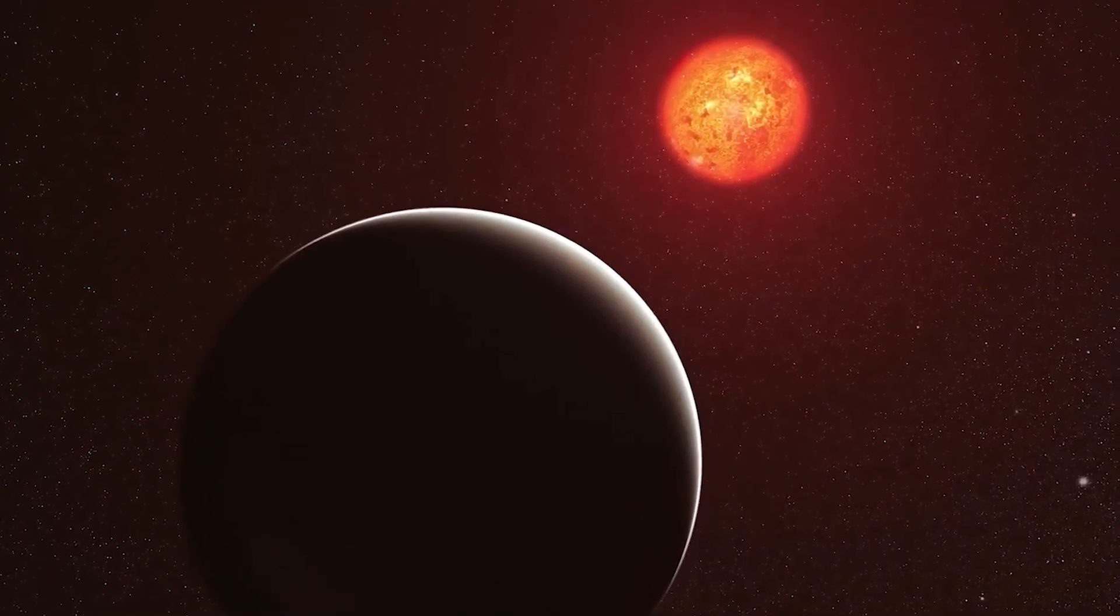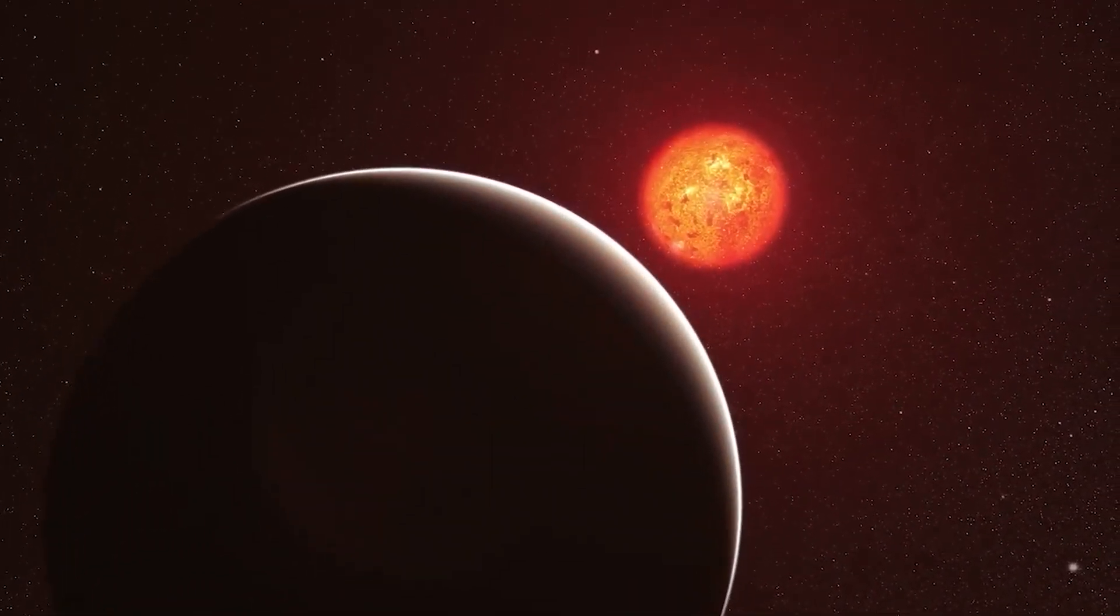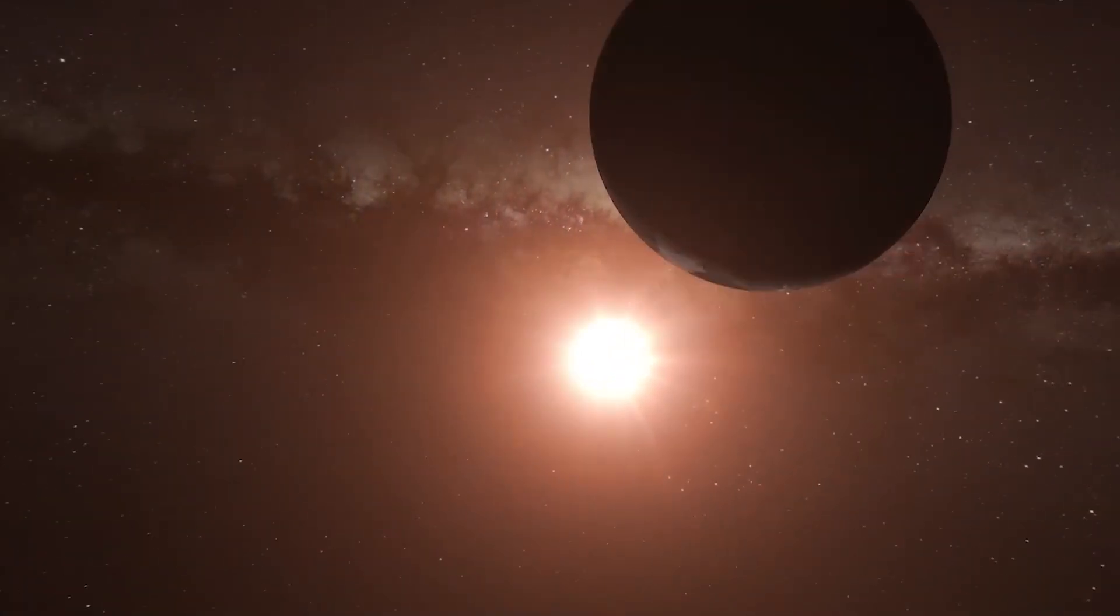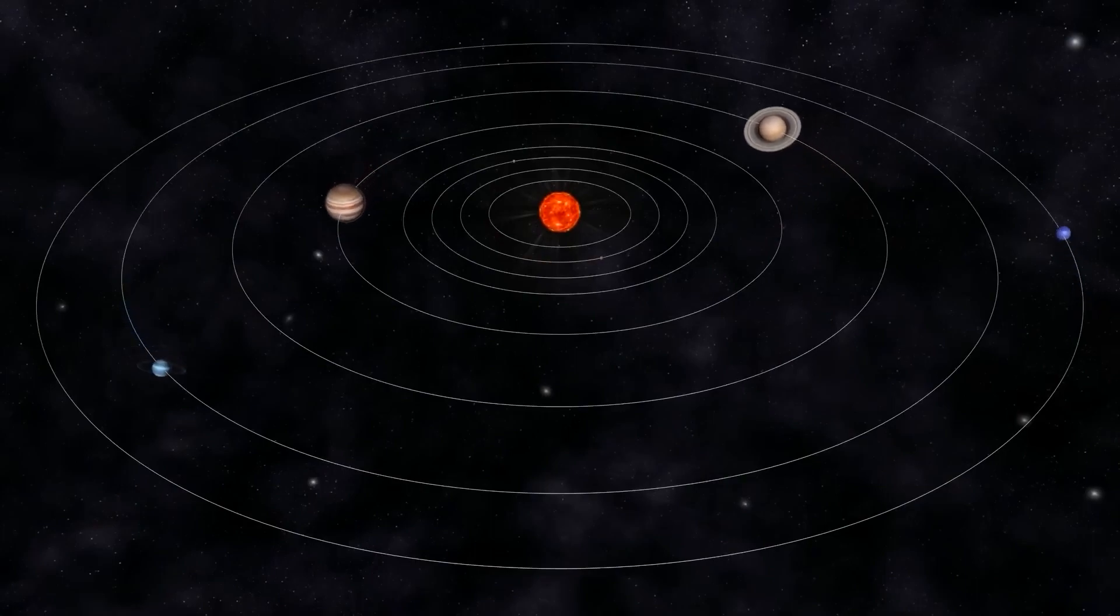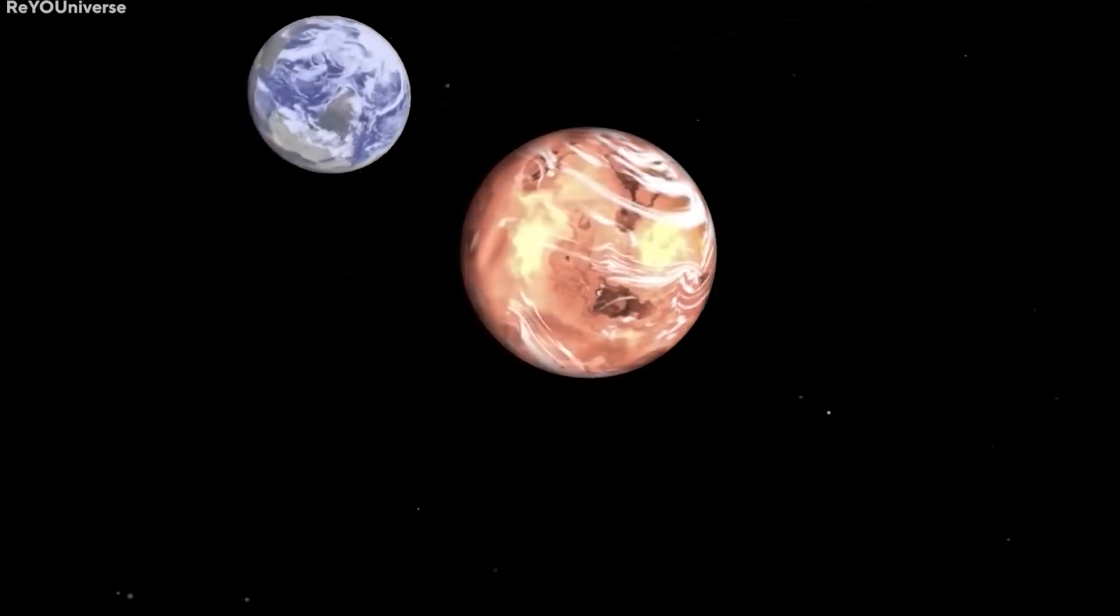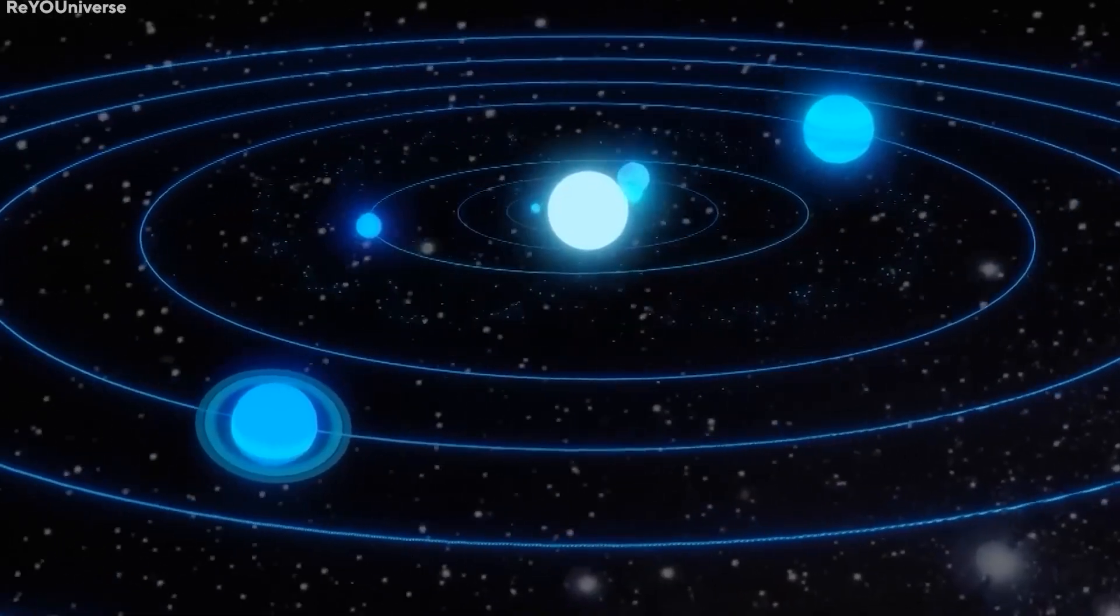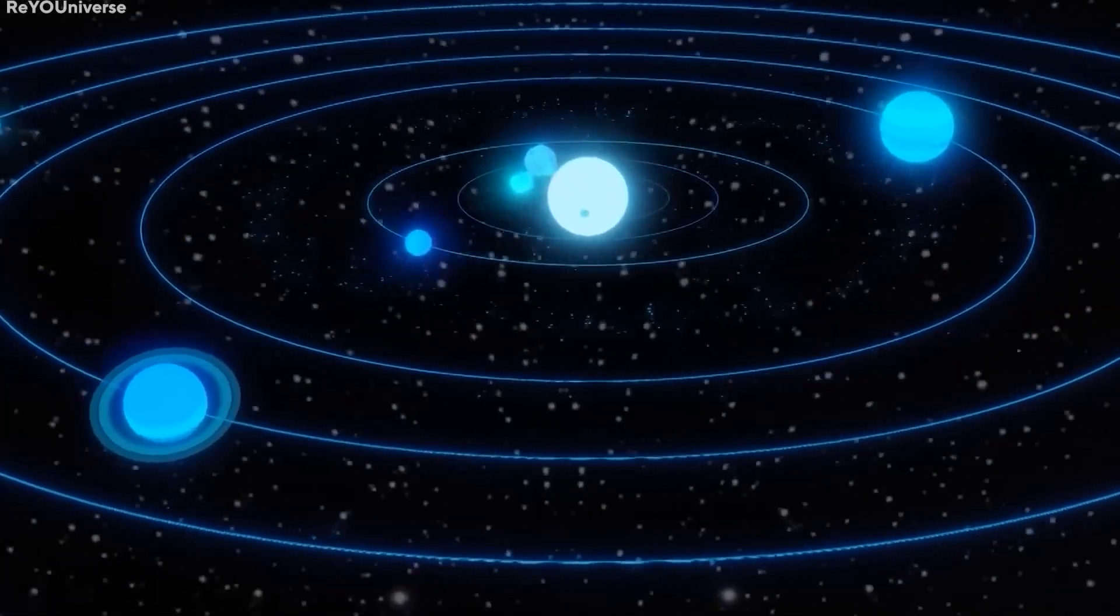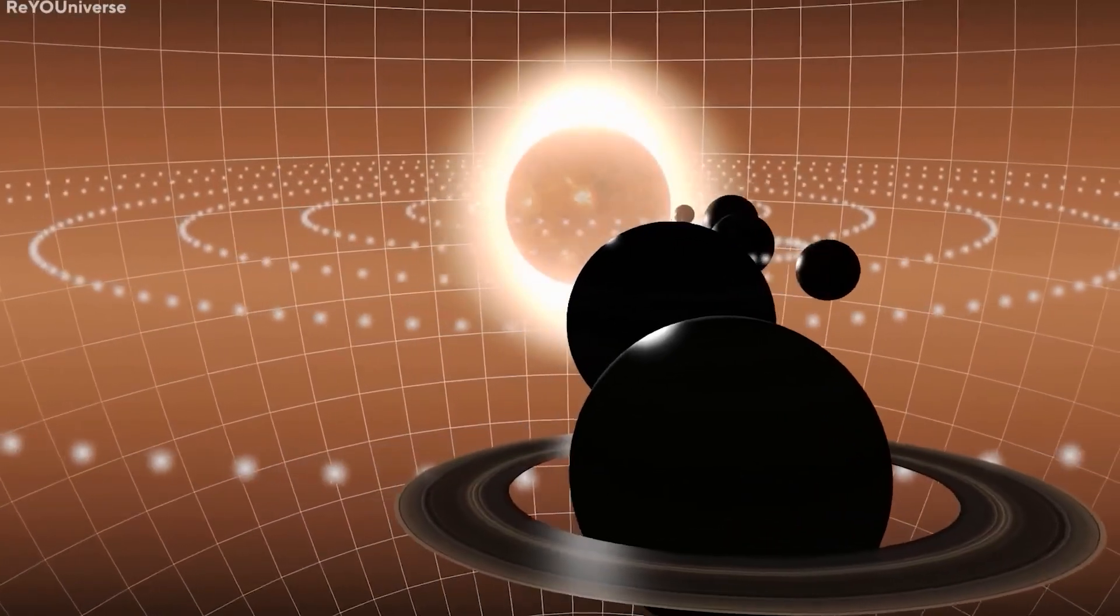Scientists believe that Proxima b lies in the sun's habitable zone. These exoplanets, including Proxima b, might be hiding aliens inside them, mainly because they are too difficult to see through them. There are also many other exoplanets. But what is so special about Proxima b?